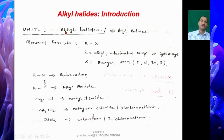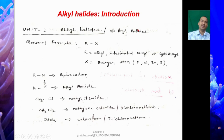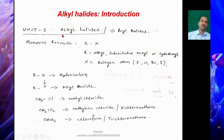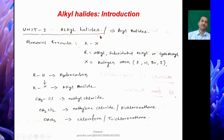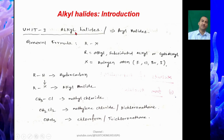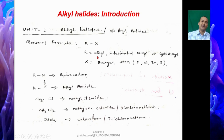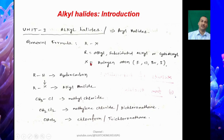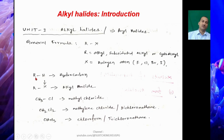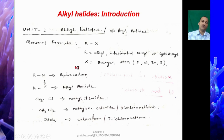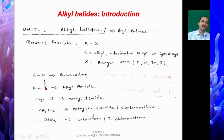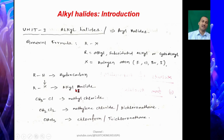Why do we study alkyl halides or aryl halides? Because they are mostly used as fire retardants, mostly used in medicines, making antibiotics, and also for making plastics. The general formula of alkyl halides is RX, where R is alkyl, substituted alkyl, or cycloalkyl, and X is a halogen atom — fluorine, chlorine, bromine, or iodine. RH is generally known as a hydrocarbon; when we substitute hydrogen by a halogen atom X, it becomes RX — an alkyl halide.